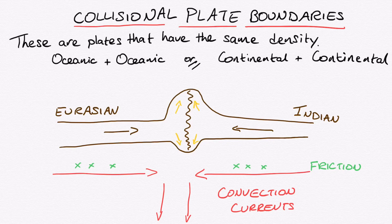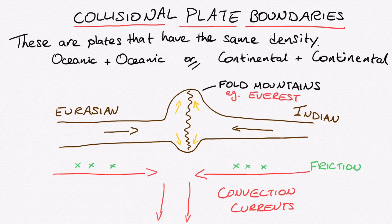When these two plates move towards each other, because they have the same density they do not become subducted like they do in a destructive plate boundary, but instead they collide and squish and fold together. This is why collisional plate boundaries form some of the largest fold mountain systems in the world — for example the Himalaya mountains.